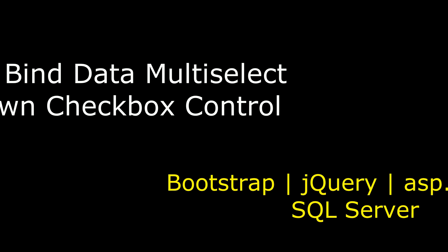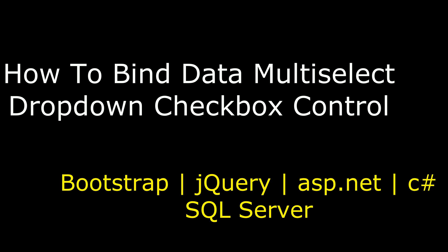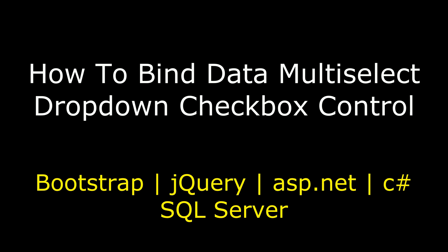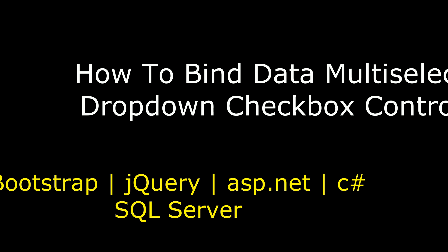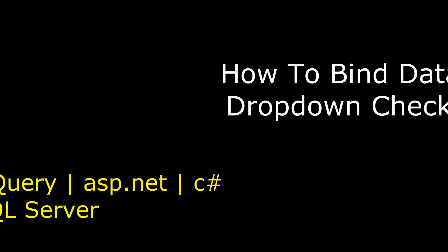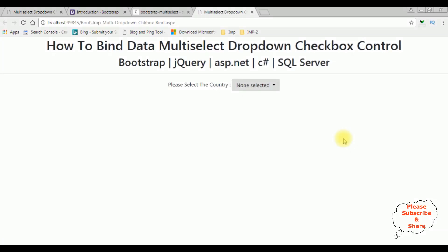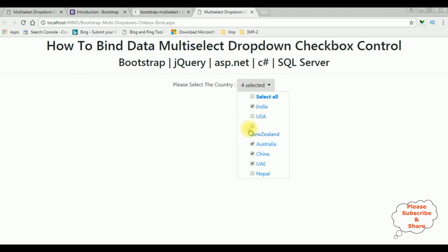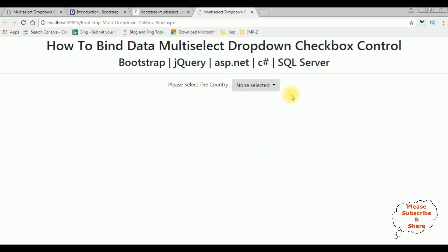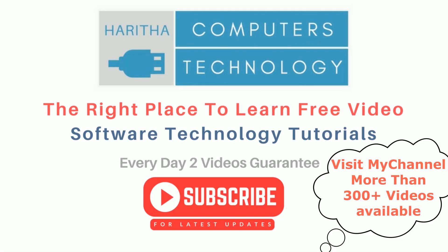Hello friends, welcome to my channel. This is Charan. In this video I will show you how to bind data into a Bootstrap multi-select drop-down checkbox control in ASP.NET using jQuery CDN. Here we got the final output — a 'Please Select the Country' drop-down list with Australia, China, UAE, India, New Zealand, and a Select All option. If you are a first time visitor to my channel, please subscribe to get the latest updates.